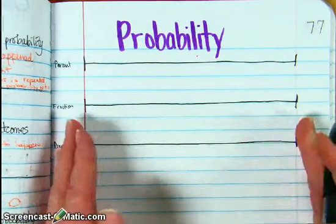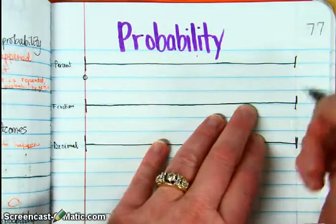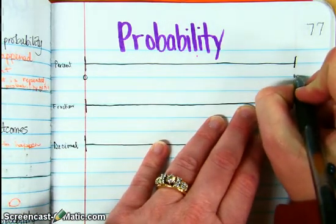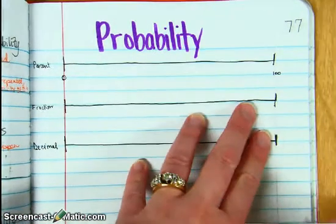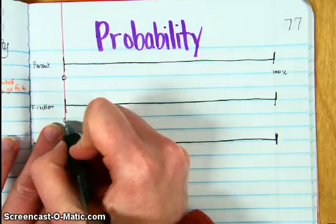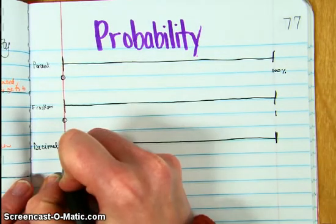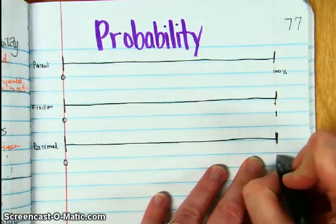I've drawn a line here, and let's say we're going on this line from zero. For a percent, we'll go to 100 percent. A fraction we'll go from zero to one whole. For a decimal we'll go from zero to one whole.